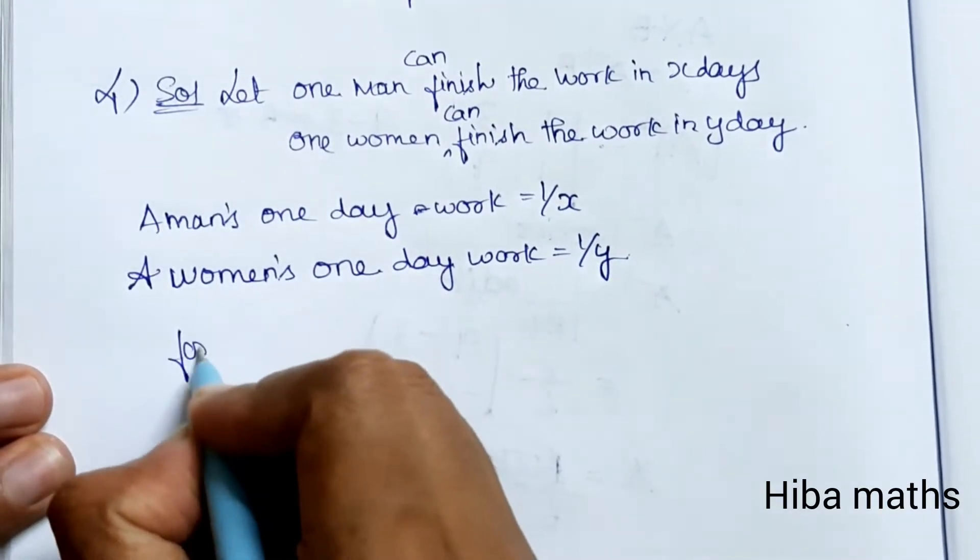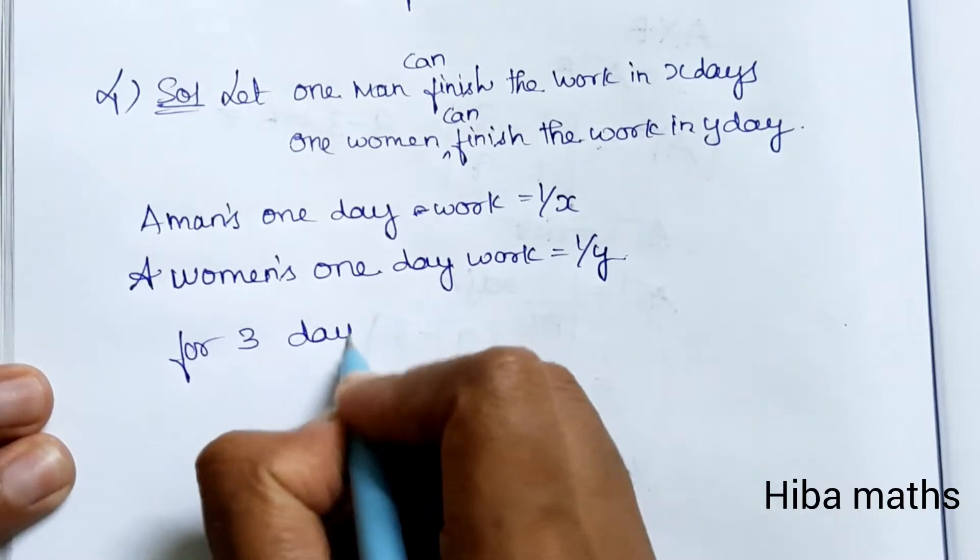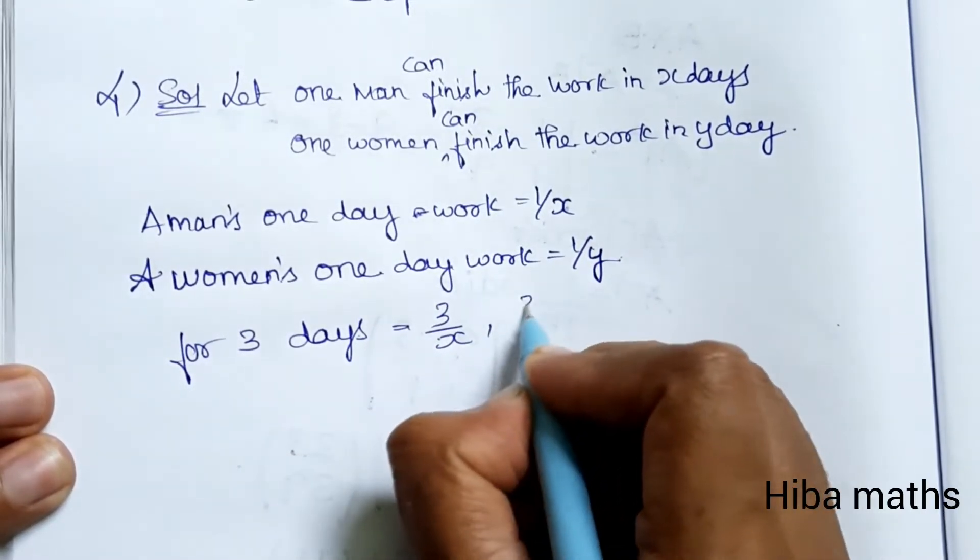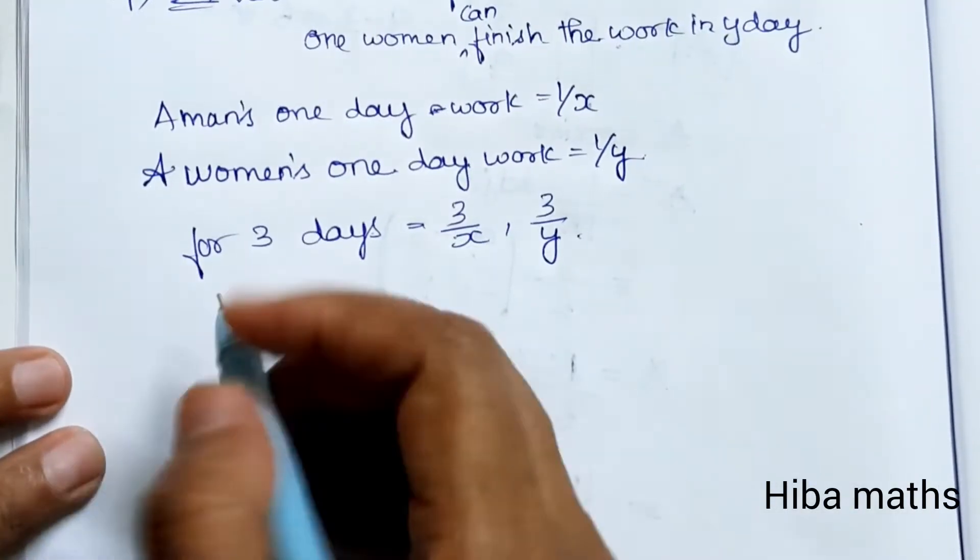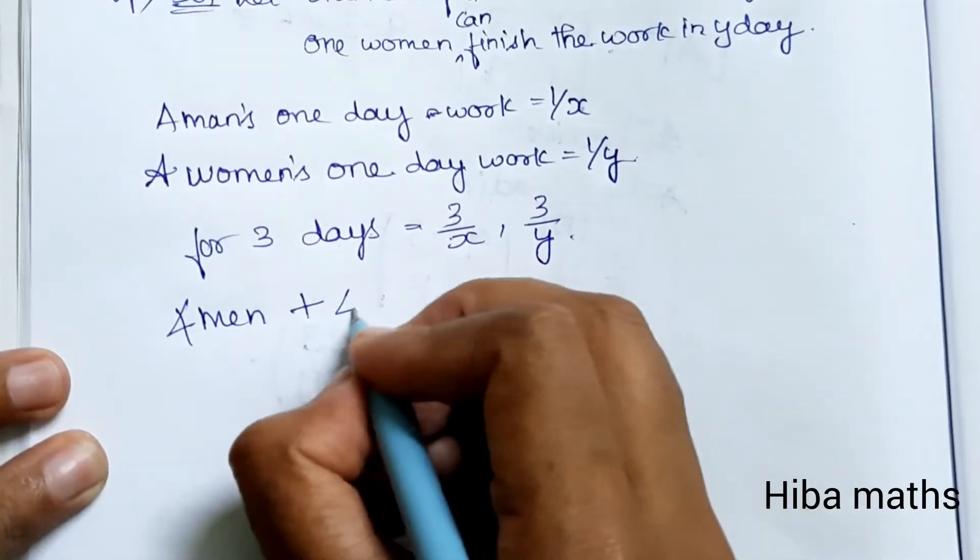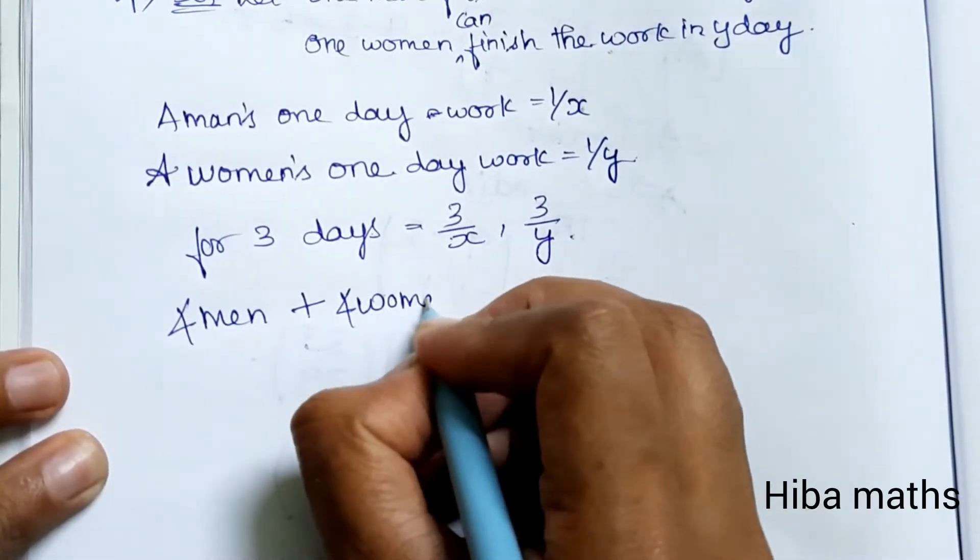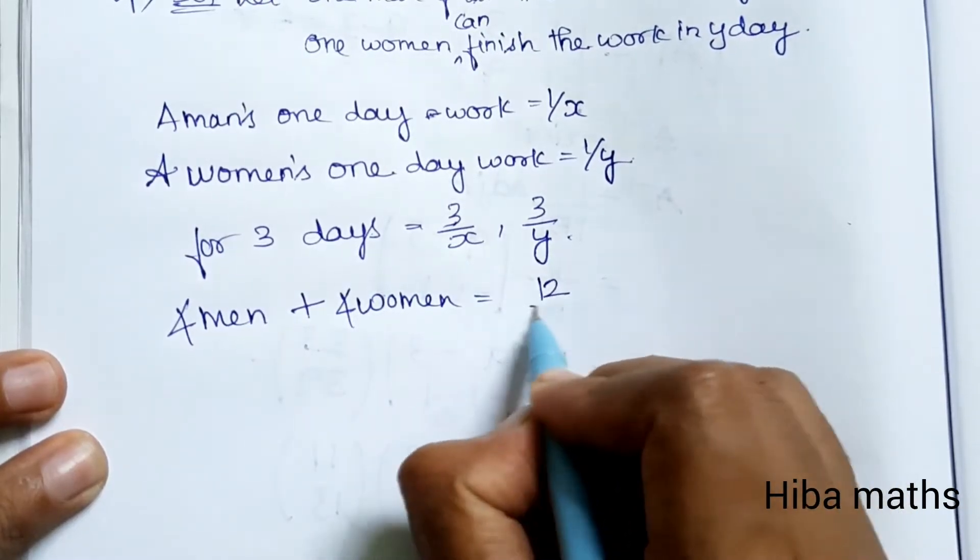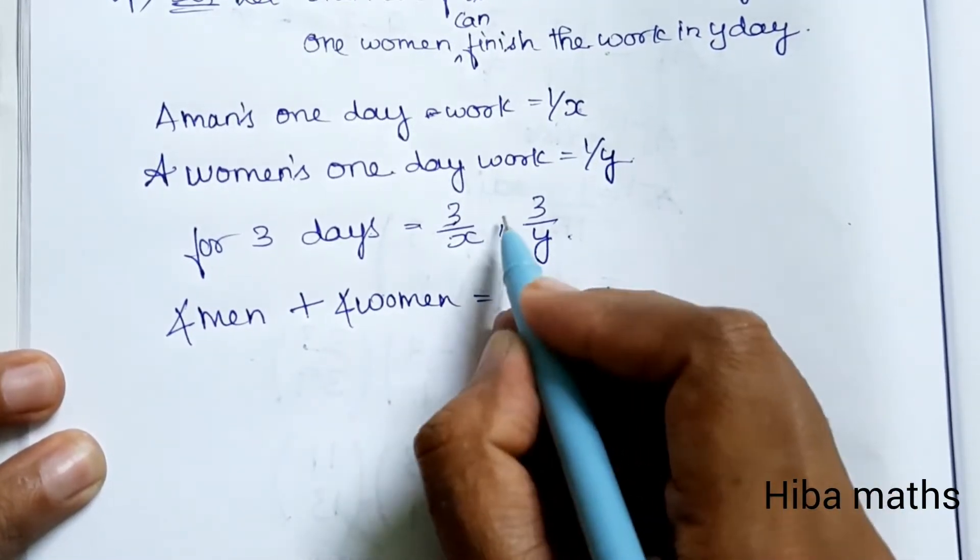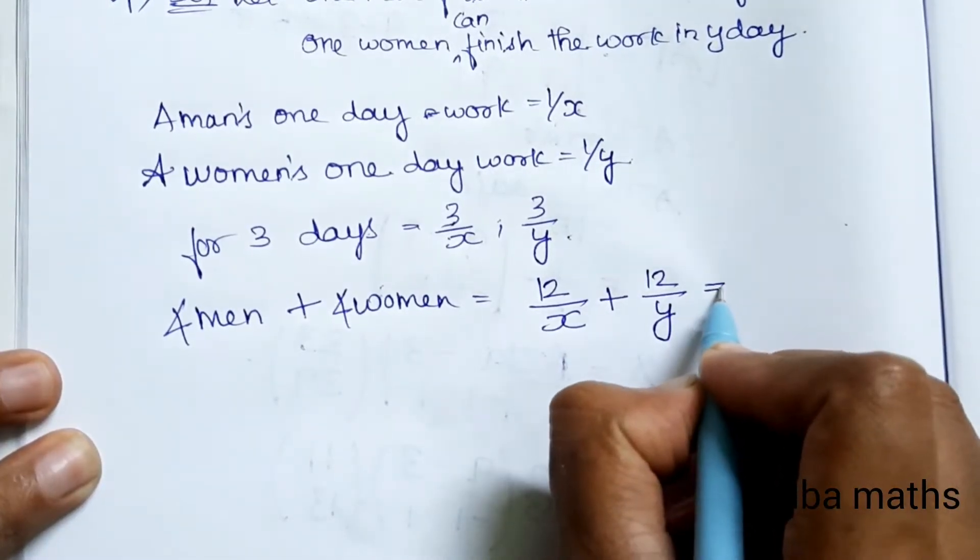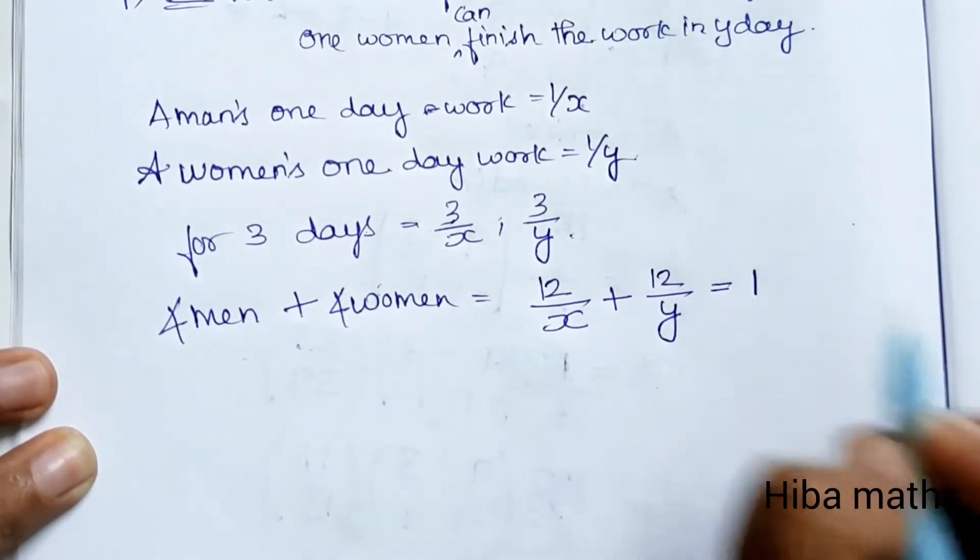First condition: for 3 days, 4 men and 4 women jointly complete the work. So 4 times 3 equals 12/x plus 4 times 3 equals 12/y equals 1.